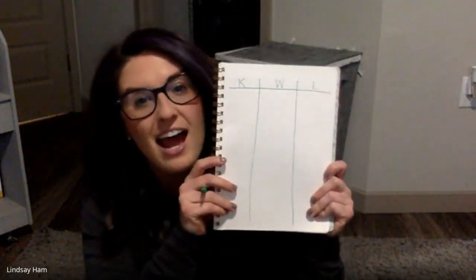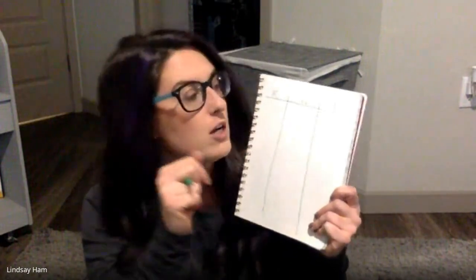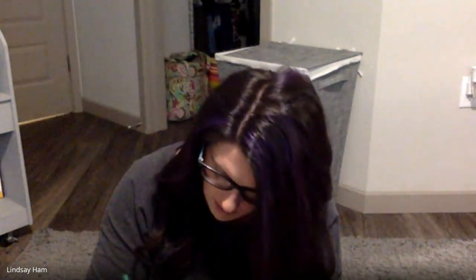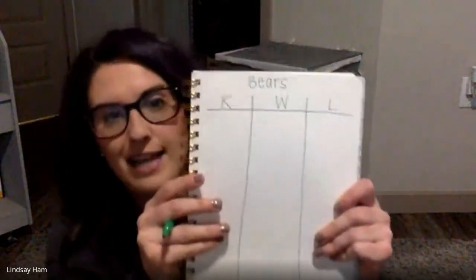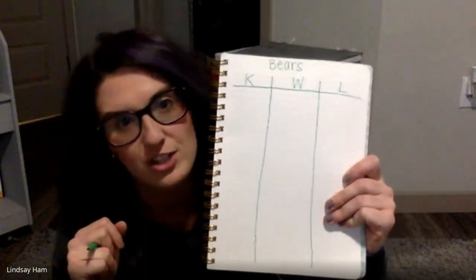At the top I'm going to write a K, a W, and an L like that. The K stands for what I already know about bears, and the W stands for what I want to know — what I want to learn. The last one we're not going to do today; you're going to do that as you do your Pebble Go research. Oh, I forgot to write a title — I need to write 'Bears' up on the top. And bears is a rule breaker: that EA doesn't make a long E, but bears.